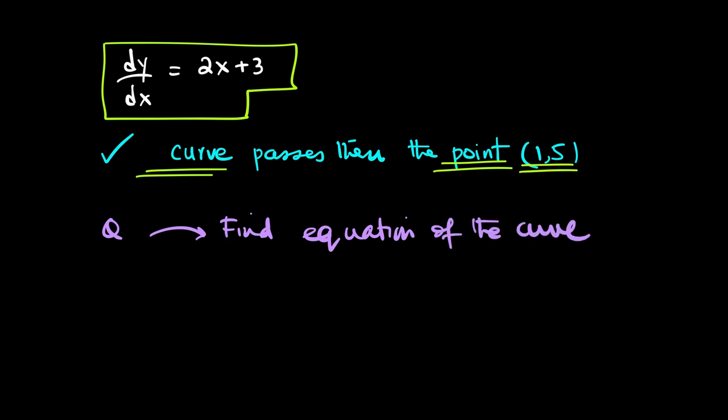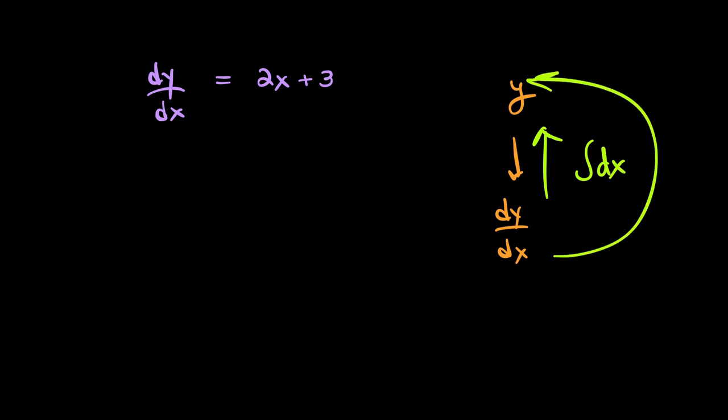So, now what do we do? We take the gradient function dy/dx equals 2x plus 3. And we know that if we differentiate y, we get dy/dx, which means that if we integrate dy/dx, we will get the equation of the curve. So, that is the process that is being applied. Instead of dy/dx, we will write y and we will integrate 2x plus 3 dx.